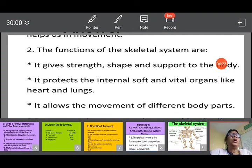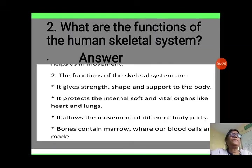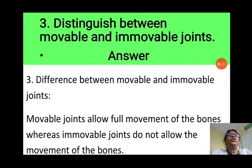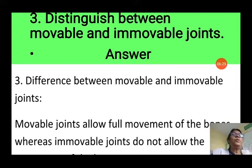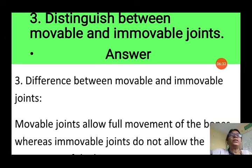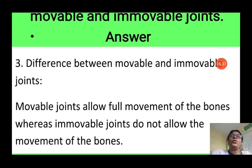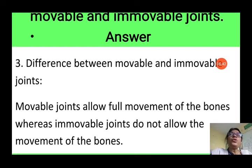Question 3: Distinguish between movable and immovable joints. Movable joints allow full movement of the bones, whereas immovable joints do not allow any movement of the bones.